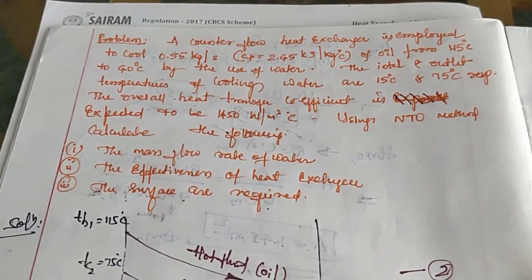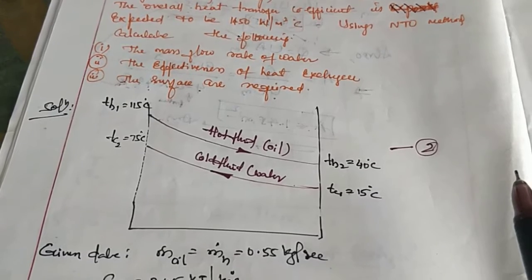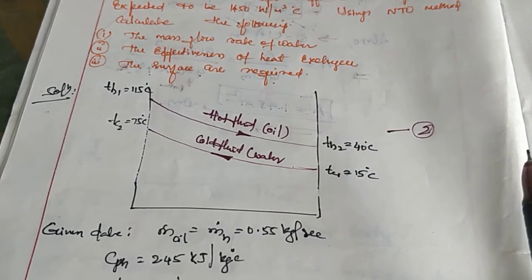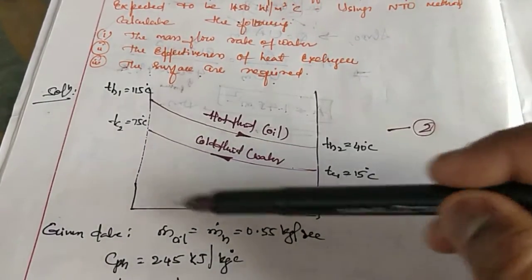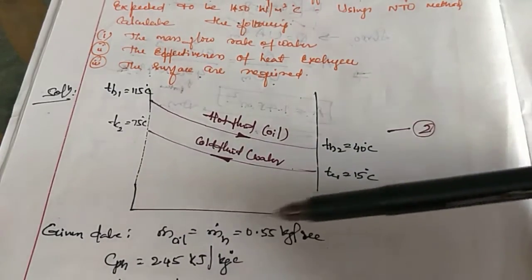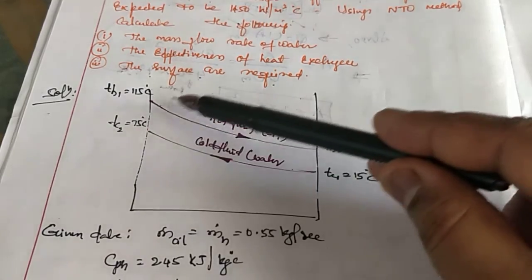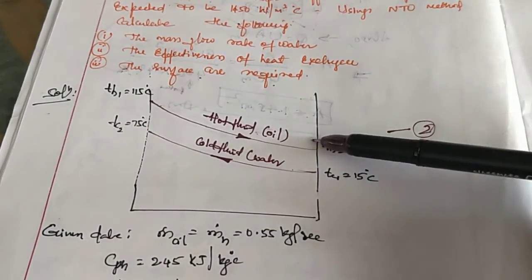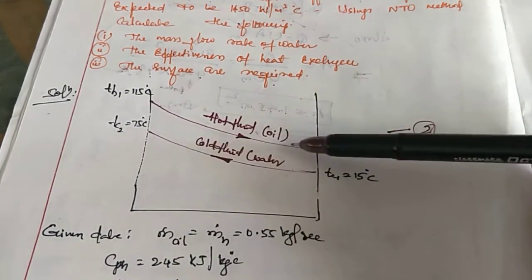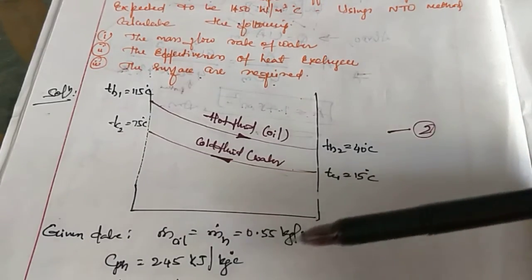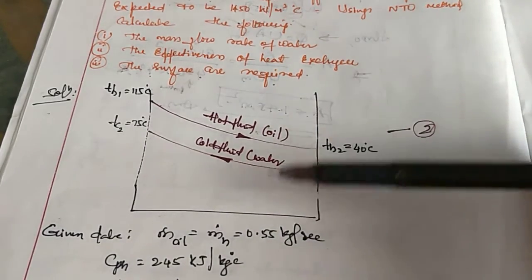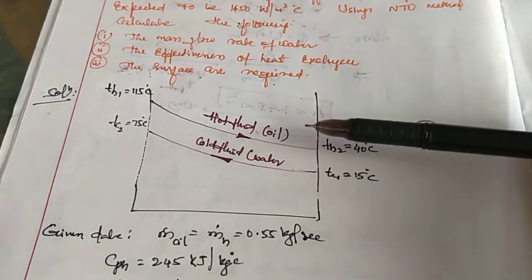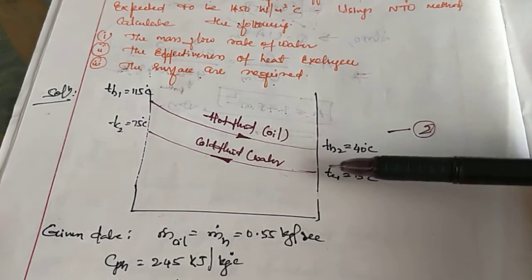First of all, before solving this problem, we have to understand what kind of heat exchanger it is. The problem states directly that it is a counter flow type of heat exchanger. So immediately we have to draw the sketch showing temperature versus length. We can show this counter flow heat exchanger with the hot fluid and cold fluid temperatures. Along with this we can write the given data.